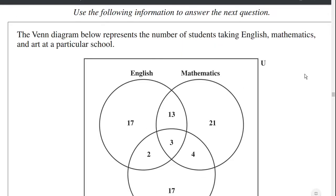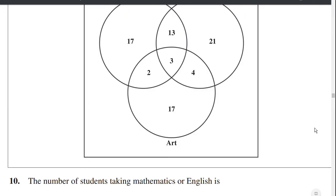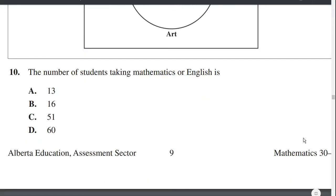Next problem, the Venn diagram below represents the number of students taking English, Mathematics, and Art at a particular school. The number of students taking Mathematics or English is... So what do they mean by or, Mathematics or English? What they're saying is everyone except for the students that are neither taking Math nor English. They want to know everyone except for the people who are not taking either one.